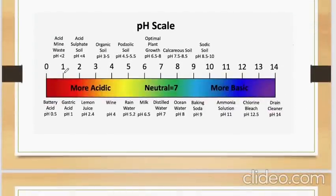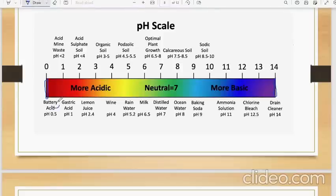See here. You have a scale of acid. The red color represents acid. The blue color represents basic. You see battery acid, the acid used in your cars, gastric acid produced by your stomach, lemon juice, wine, rainwater - these all are acidic in nature. Milk, even milk. But distilled water is neutral. It has a pH of 7. Then ocean water, baking soda, ammonia solution, chlorine bleach, and even drain cleaner are all basic in nature.